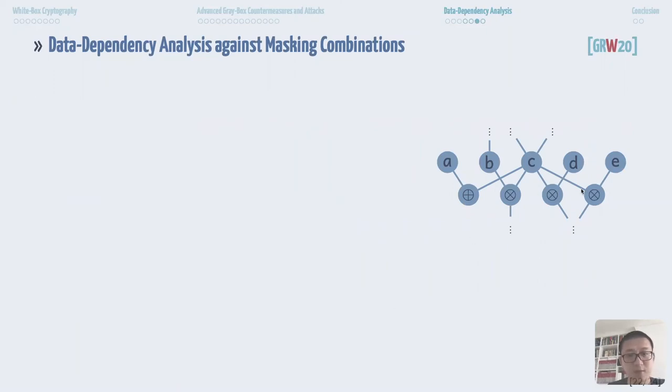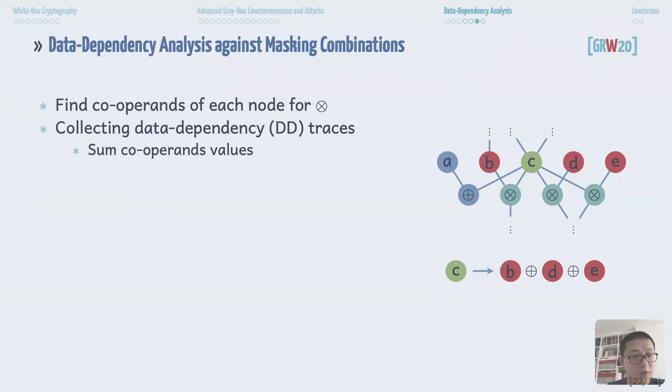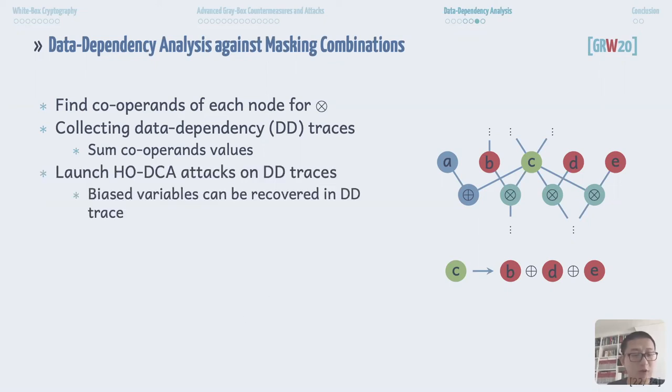Now consider a circuit-based white box implementation. So for each gate we compute its co-operands for AND operation. For instance, if we look at gate c, it multiplied with b, d, e, three gates. And we consider b, d, e as the co-operands for gate c for AND operation. As we have shown before, if c happens to be a share of some variable, b, d, e could be a linear share of some sensitive intermediate variable. Our data dependency analysis then collects data dependency traces which contains the sum of the co-operands of each gate for AND operation. Then we perform standard DCA on the data dependency traces. The attack would succeed if some sensitive variable is recovered in the data dependency traces.